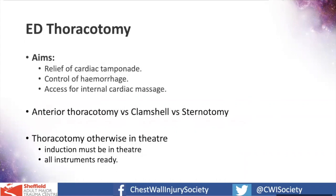The aim of ED thoracotomy is to relieve cardiac tamponade, control haemorrhage, and potentially allow internal cardiac massage. The best technique is to identify from clinical examination or a FAST scan which side to approach. A left anterior thoracotomy is easily extended into a clamshell going across the midline through the sternum to the other side if necessary, and can be extended to access all four body cavities — the left and right pleural cavities, the pericardium, and the abdominal cavity.